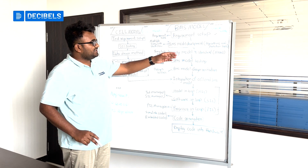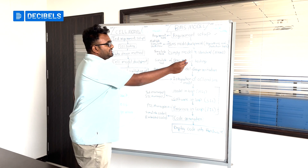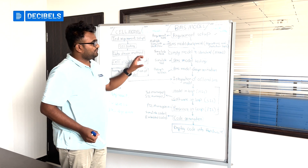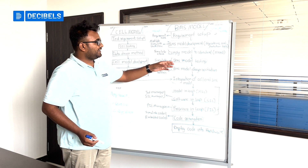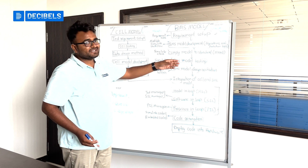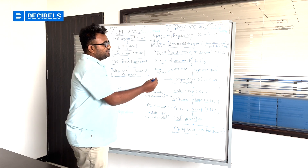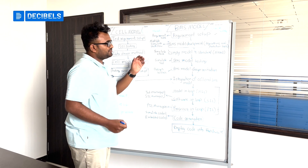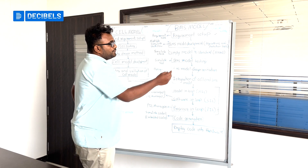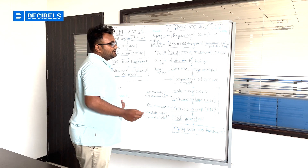Once the model is compliant to the standard, we take the model for testing. In model testing, we use Simulink Test as a toolbox. With different input scenarios, we test the model. We create a test harness for the controller model you have developed, and through the test harness we create different input scenarios such as logic-based testing, and internal and external based testing, to check whether you are getting the desired results.